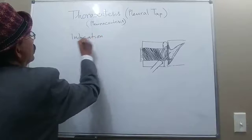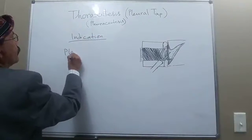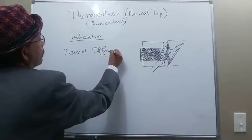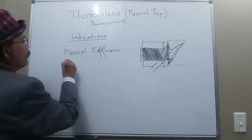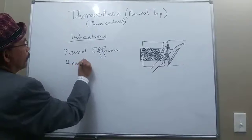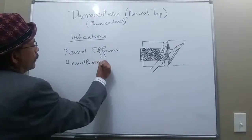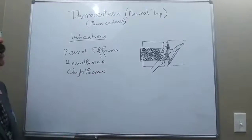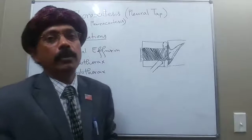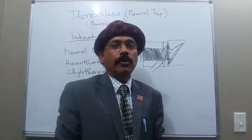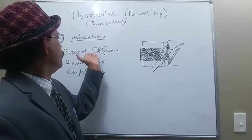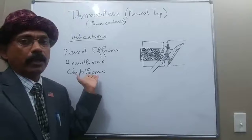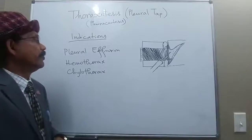The indication for thoracentesis is pleural effusion, hemothorax, or chylothorax. When there is collection of fluid in the interpleural space — the potential space between the parietal pleura and visceral pleura — we call it pleural effusion. Collection of blood is hemothorax, and collection of lymphatic fluid is chylothorax.